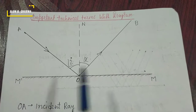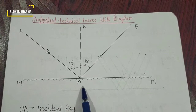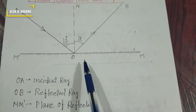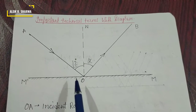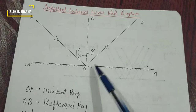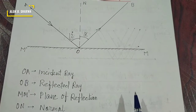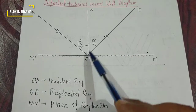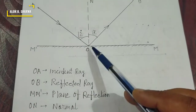In the diagram, M-M dash is a smooth surface or mirror — the plane of reflection. O is the point of incidence where the light ray falls. O-N is the normal — a perpendicular line drawn at the point of incidence. O-A is the incident ray, which is the ray coming toward the mirror. O-B is the reflected ray, which reflects back.